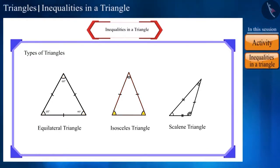And, in a scalene triangle, the measure of the three angles and the length of the three sides are unequal. Friends, the measurement of the angles of triangles depends on the lengths of the opposite sides.